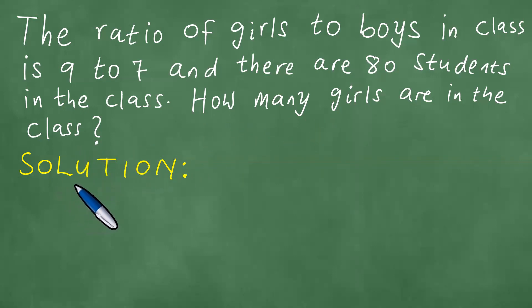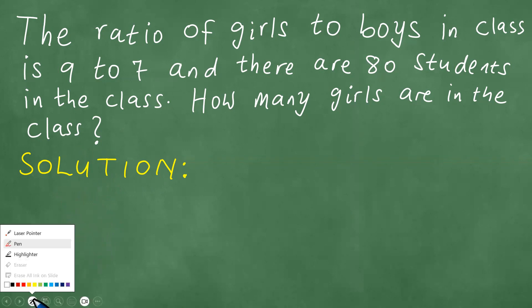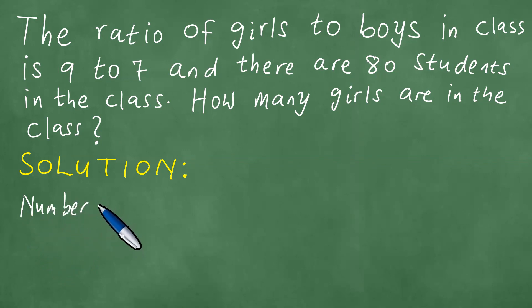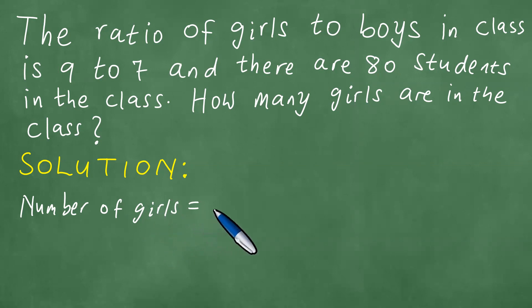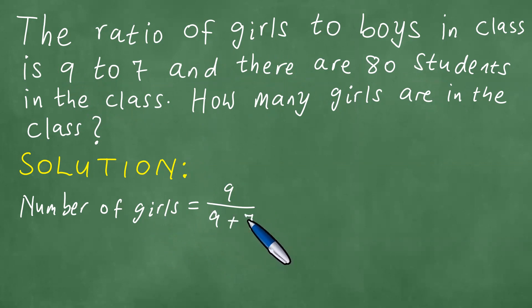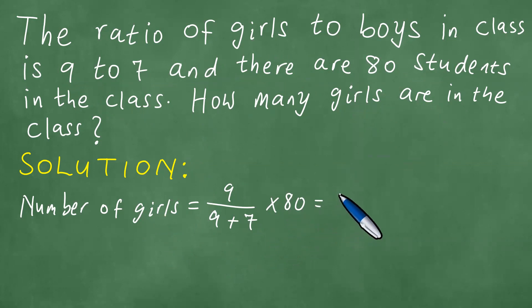We proceed to write down the solution to the problem. Because the ratio of girls to boys in class is 9 to 7, the number of girls is going to be 9 out of 9 plus 7, multiplied by the number of students in the class, 80. That gives us 9 out of 16, multiplied by 80.